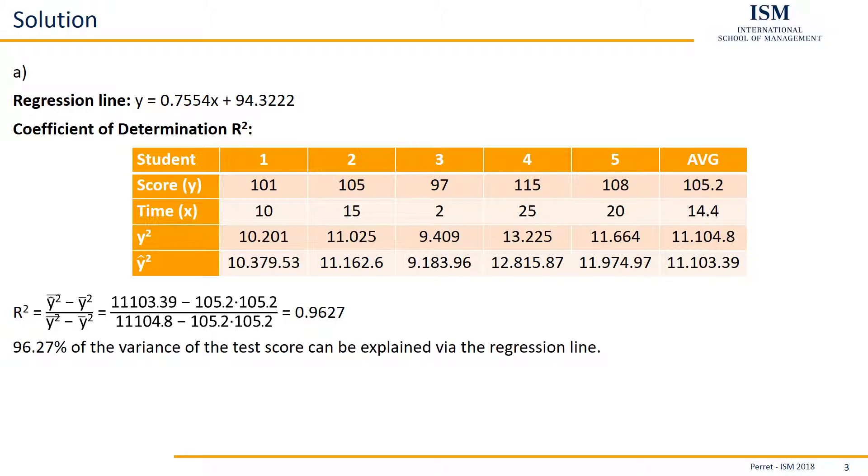This means that 96.27% of the variance of the dependent variable, so here of the test score, can be explained via the regression line, so via the time spent preparing. Now we want to know whether this is actually a significant share, so if the model has significant explanatory power. This we're going to test via an F-test.